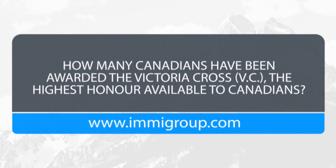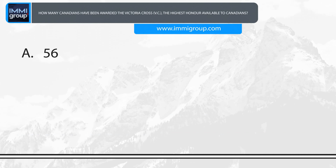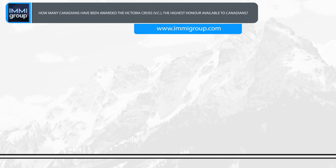How many Canadians have been awarded the Victoria Cross — the highest honour available to Canadians? A. 56. B. 96. C. 1,024. D. 42. Answer: 96.